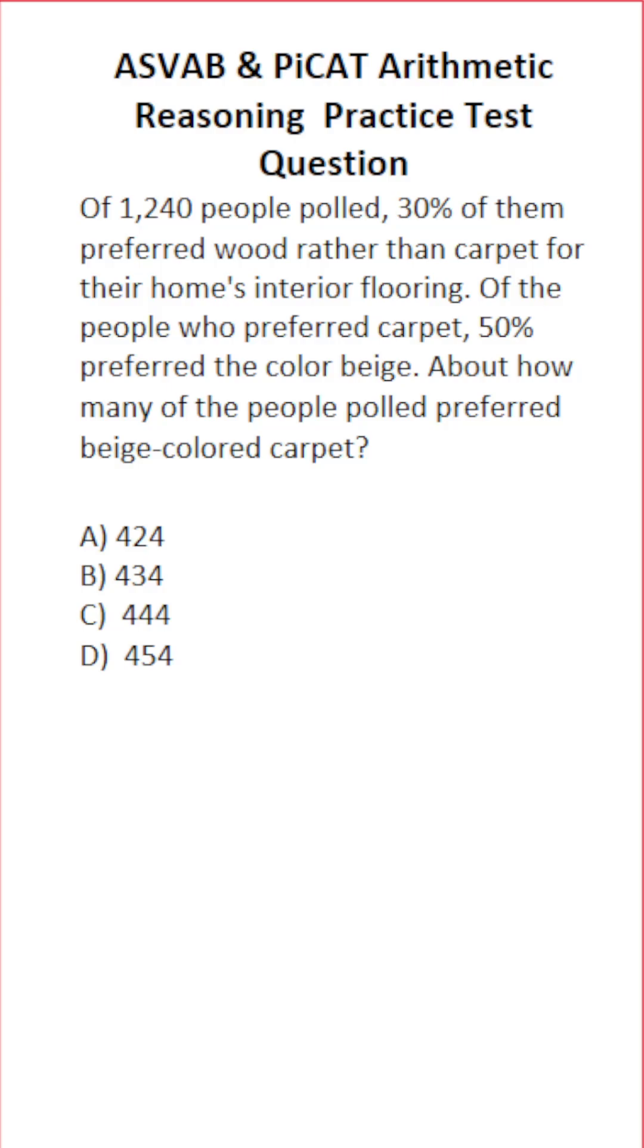So let's start right here. If 30% of the people polled preferred wood rather than carpet, that means 100 minus 30%, 70% of the people polled preferred carpet. So the first thing we have to do is figure out what 70% of 1,240 is. And to do that, we're going to do 1,240 times 0.7.